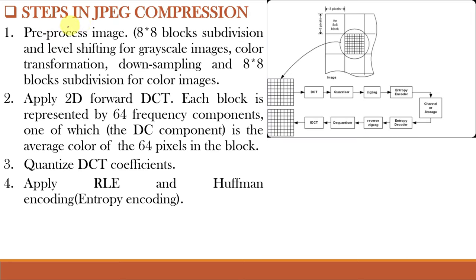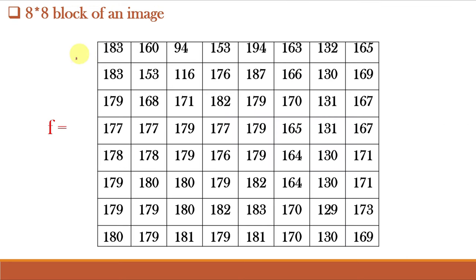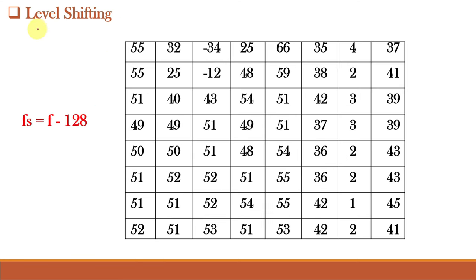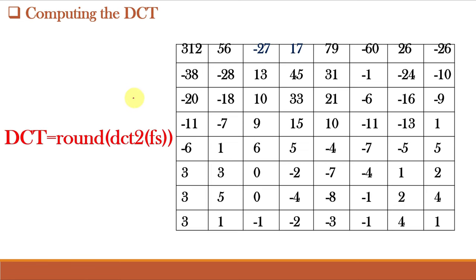These are the steps in JPEG compression. Say this is an 8 x 8 block of an image which we are compressing. Next we do the level shifting where we shift the levels from 0 to 255 to minus 127 to 127 because DCT requires range to be centered around 0. Next we compute the DCT using forward DCT equation.